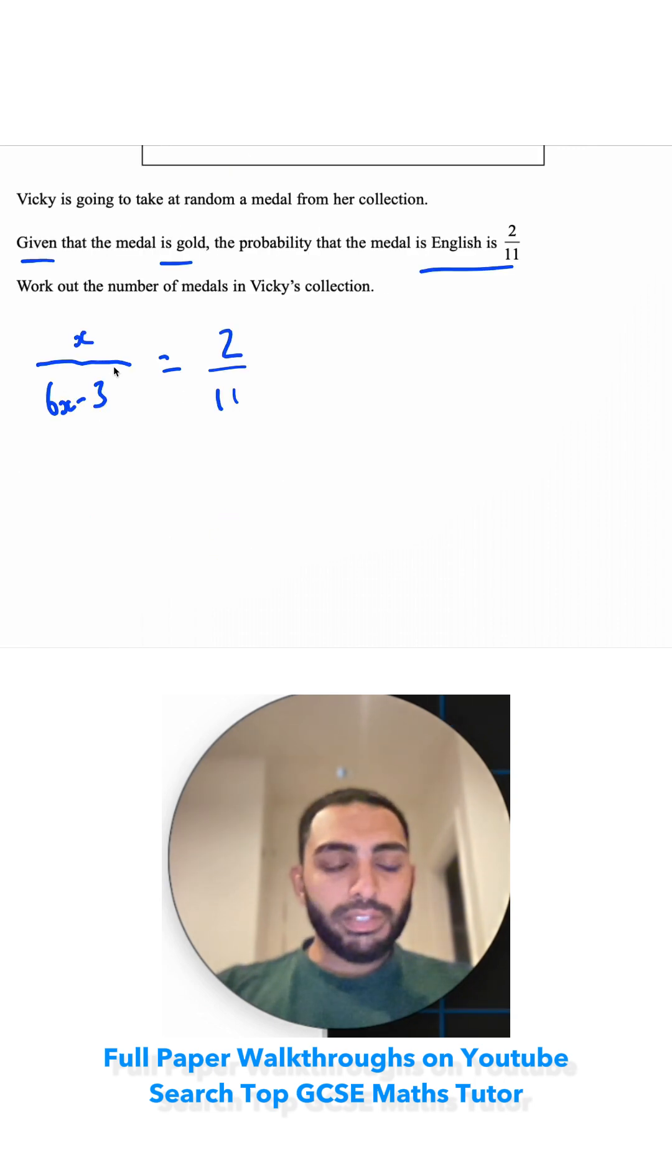I just need to solve this equation now. So I cross multiply. I'm multiplying this x by 11, so it becomes 11x. And I'm multiplying this 2 by 6x minus 3. So 6x times 2 is 12x. Negative 3 times by 2 is negative 6.